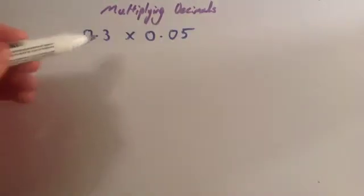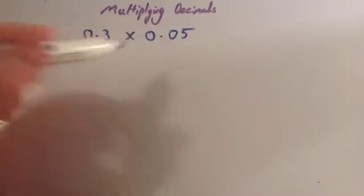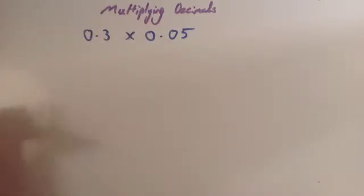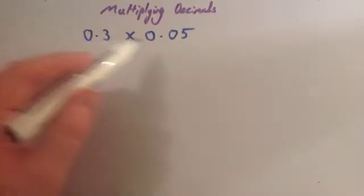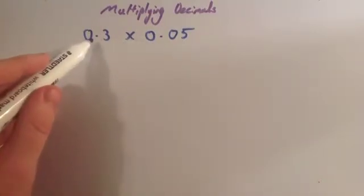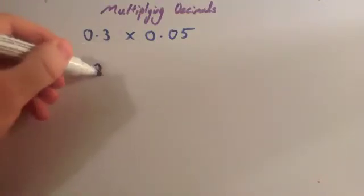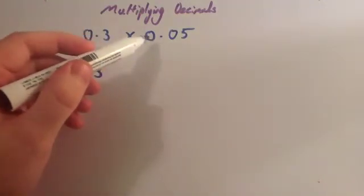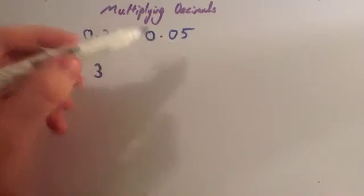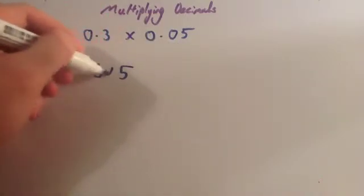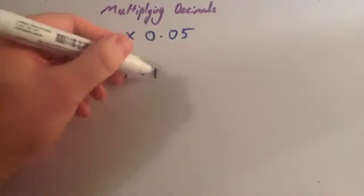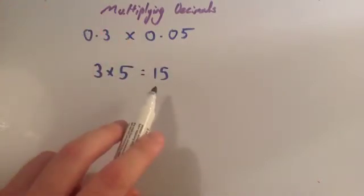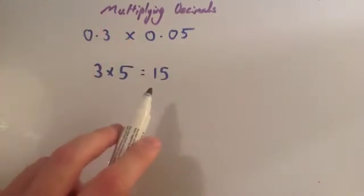Now we're going to look at 0.3 multiplied by 0.05. You use the same steps: ignore the decimal points and multiply the numbers, then put the decimal point back in. If you ignore the decimal point in 0.3, you just have 3. If you ignore the decimal point in 0.05, you just have 5. So you have 3 times 5, which is 15. So we've got 15 from multiplying the two numbers.